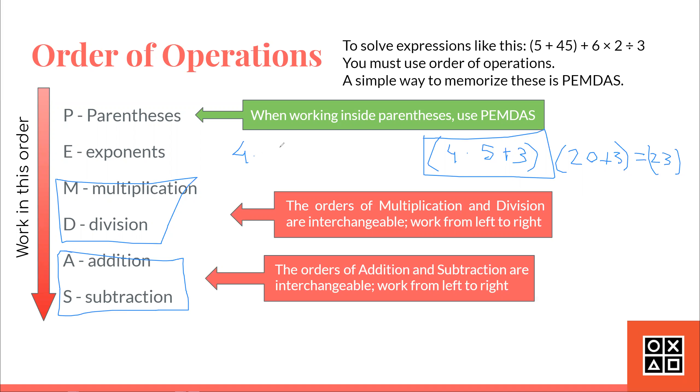For example, if it was 4 times 5 divided by, let's just say, divided by 10, for simplicity's sake. In this case, you would think to yourself, what would you do here? Because I have multiplication and division here. So, you have to work from left to right.